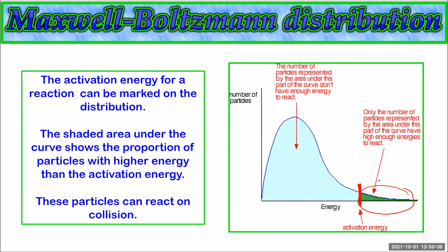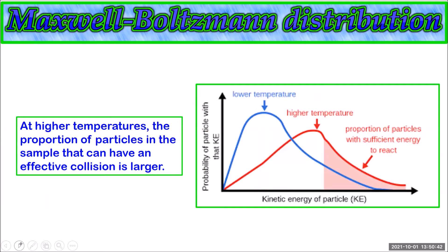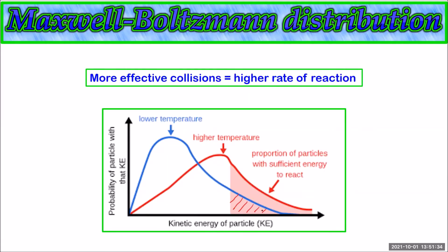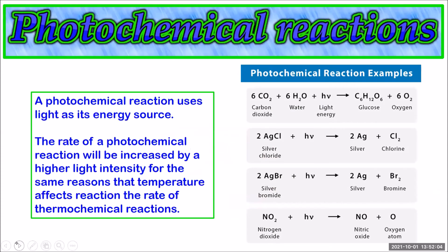The larger the shaded area beyond the activation energy line, the higher the rate of reaction. At a higher temperature the shaded area beyond the activation energy is much larger, meaning more particles have sufficient energy to react, giving more effective collisions per second and a higher rate of reaction. At the lower temperature the proportion of particles beyond the activation energy is lower, leading to fewer effective collisions and a lower rate. So in summary, a higher temperature results in more collisions and a greater proportion of those collisions being effective — a double reason for a higher rate of reaction.